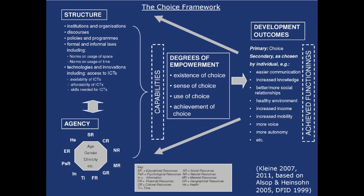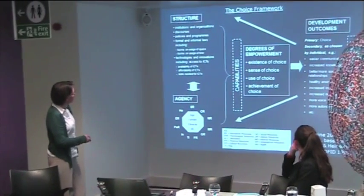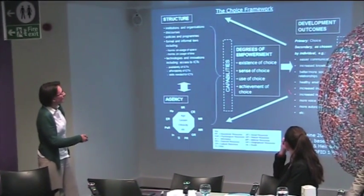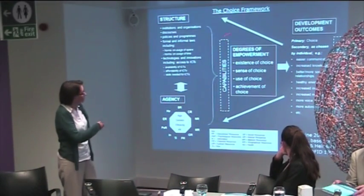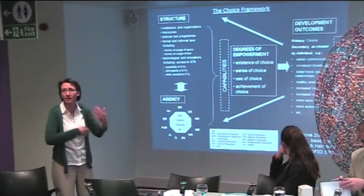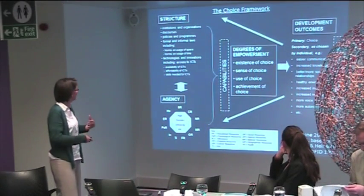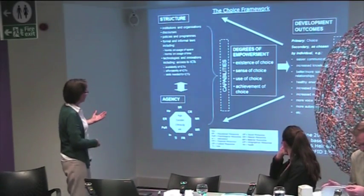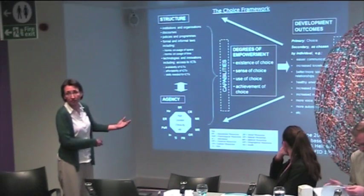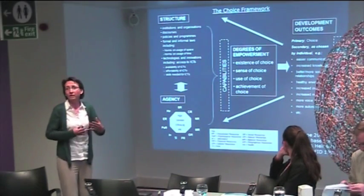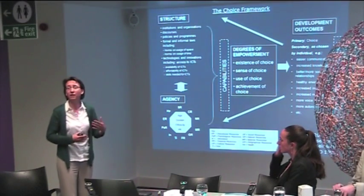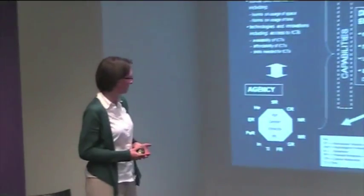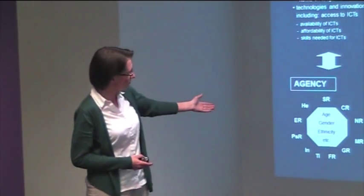We have four key elements: structure, agency, degrees of empowerment, and development outcomes. You might see these arrows — we're talking about a systems approach, something systemic with feedback loops. There are effectively 11 different resources that form the basis of an individual's agency — both material and non-material resources. Reading them: educational resources, psychological resources, information, financial resources, cultural resources, time, social resources, natural resources, material resources, geographical resources, and health.